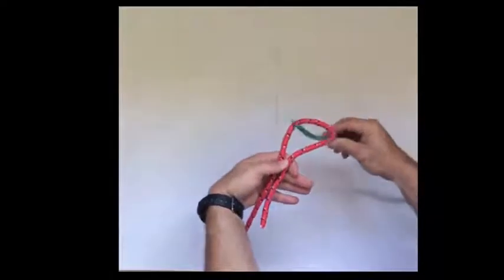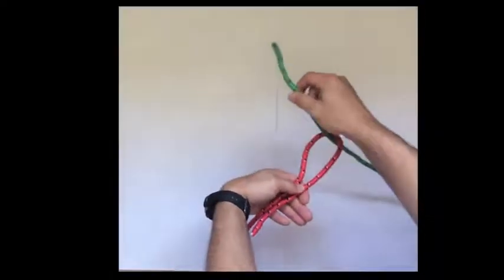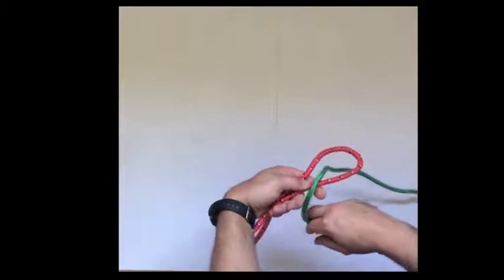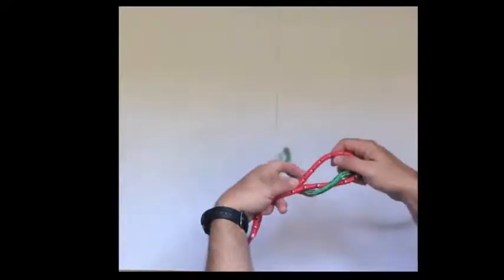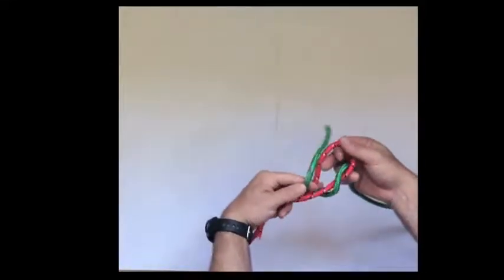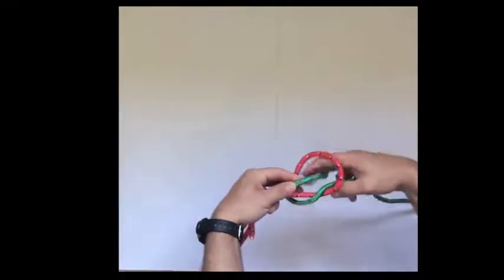How do we tie it? We make the loop, we come up, we come to the same side as the tail of the loop. Round the back, tuck it back through the loop and pull up.